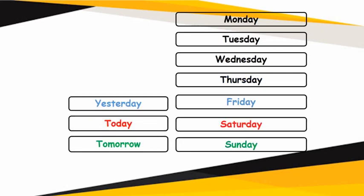Now, match today with which day? Red in color — read and try. It's Saturday. So today is Saturday. If today is Saturday, yesterday it was blue — Friday. And tomorrow it will be green — Sunday.